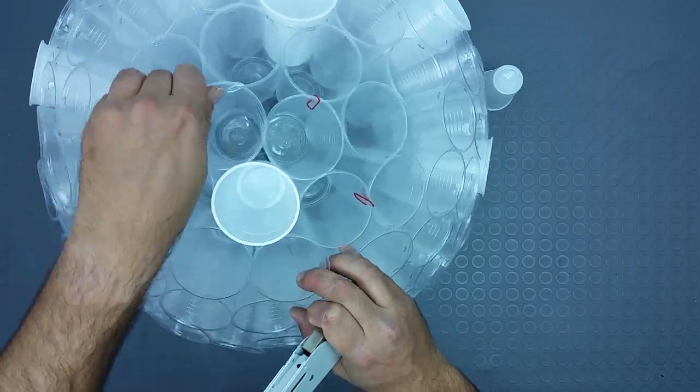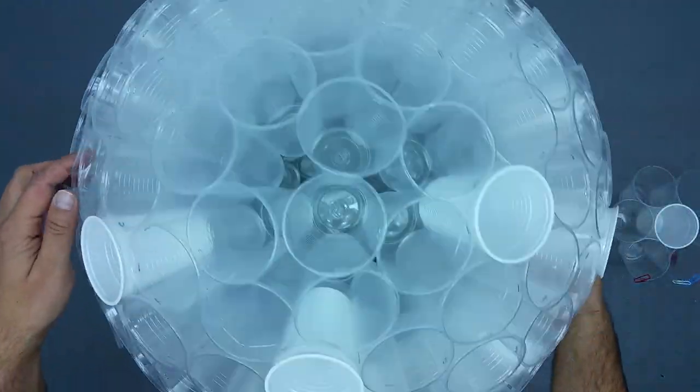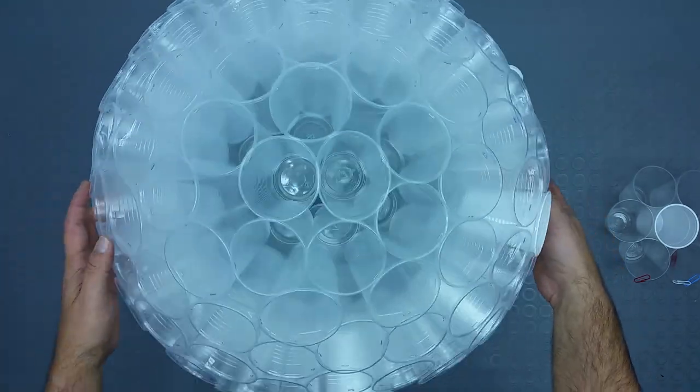And now, let's remove the hexagon that I didn't staple before. This one will be used as a small entrance to insert the bulb inside the sphere.